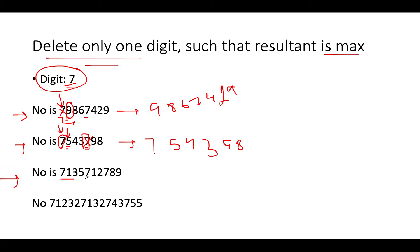In the next example there are three occurrences of 7. Let's iterate over it. The first 7 has an immediate next value that is lower, so we skip it and look for more possibilities. The second 7 also has an immediate next value that is lower, so we look further. At the third 7, the next value is 8, which is higher than 7. As a result, we delete this 7, and the answer becomes 713571289.